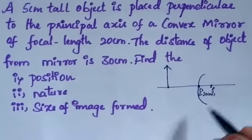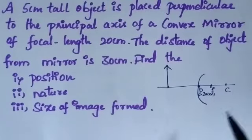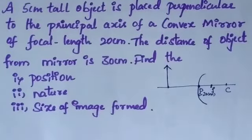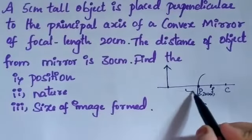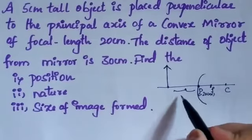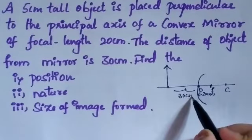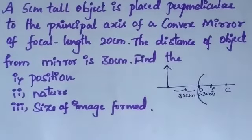This is the center of curvature. The distance from the mirror to the object is 30 cm — that is, the distance between the object and the mirror is 30 cm. We have to find the position, nature, and size of the image formed.